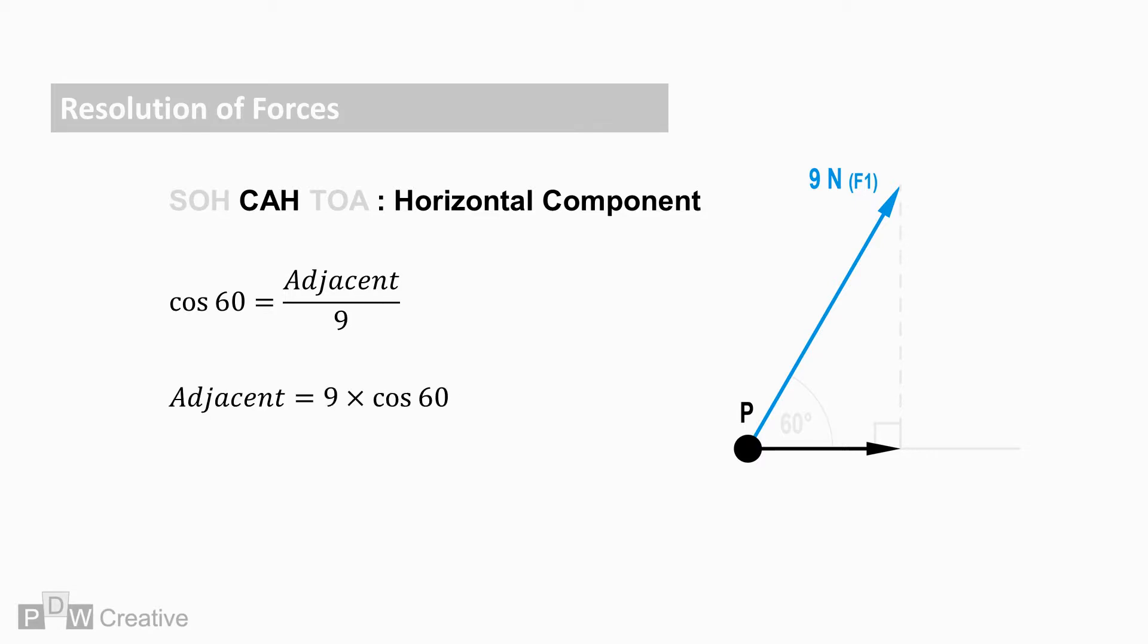The missing horizontal force is the length of the adjacent face. So by reworking the cosine equation, the horizontal can be found. In this case being 4.5 newtons.